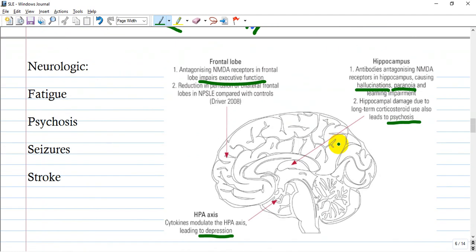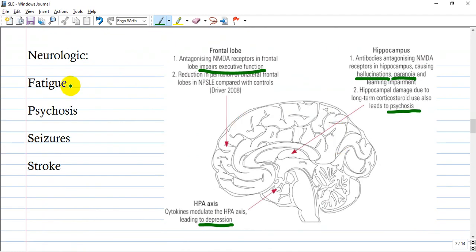Neurologically, we can find fatigue, psychosis, seizures, or stroke, depending on which zone is mostly affected from this vasculitis. If it's the hippocampus, the patient will have hallucinations, paranoia, and psychosis. If it's the frontal lobe,